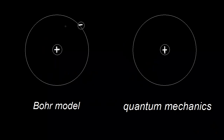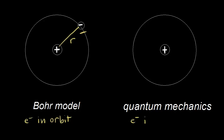In the Bohr model of the hydrogen atom, the one electron of hydrogen is in orbit around the nucleus at a certain distance r. In the quantum mechanics version of the hydrogen atom, we don't know exactly where the electron is, but we can say with high probability that the electron is in an orbital. An orbital is the region of space where the electron is most likely to be found.